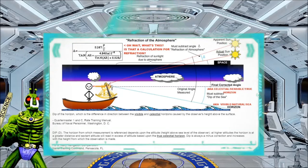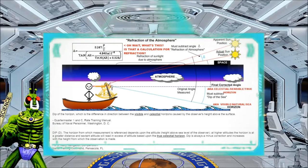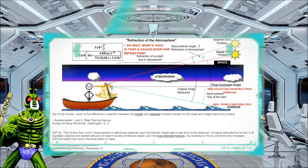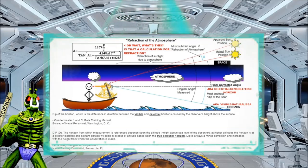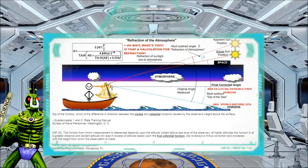Moving on. Dip. The horizon from which the measurement is referenced depends upon the altitude, height above sea level of the observer. At higher altitudes, the visible horizon is at a greater distance, and the sextant will read in excess of altitude based on, what was that? True celestial horizon. Dip is always a minus correction and increases with the height from which the observation is made. U.S. Navy Navigation Compendium, Naval Training Command, Pensacola, Florida.